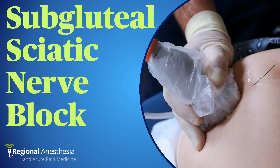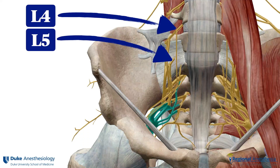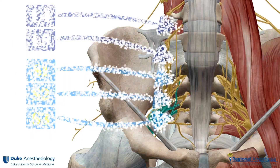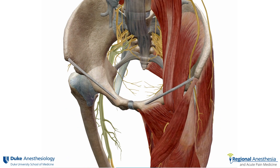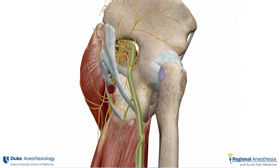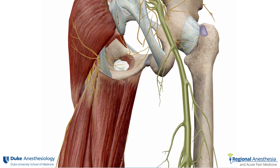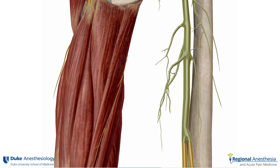In this video, we'll discuss the anatomy and technique for the subgluteal sciatic nerve block. The sciatic nerve is derived from the ventral rami of L4, L5, as well as S1, S2, and S3. These combine to form a single large nerve that then leaves the pelvis through the greater sciatic foramen. The nerve continues to course down the posterior thigh, supplying motor fibers to the hamstring muscles, before dividing above the popliteal fossa into its two terminal branches: the tibial and common peroneal nerves.